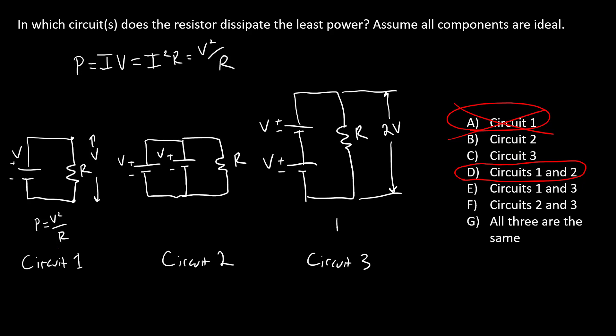So it should be pretty clear that in that case, we're gonna have two V squared over R. The power dissipated by the resistor in this circuit is going to be bigger than the power dissipated by the resistor in this circuit with just one battery here.